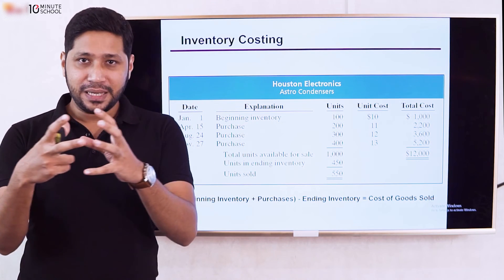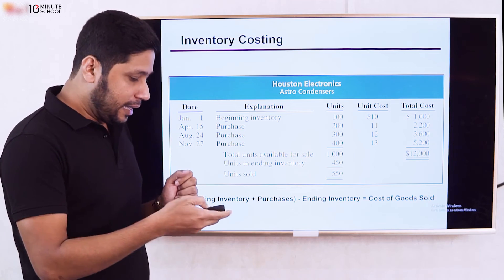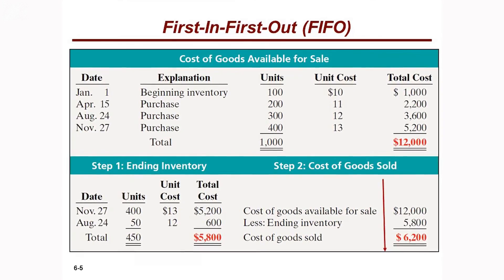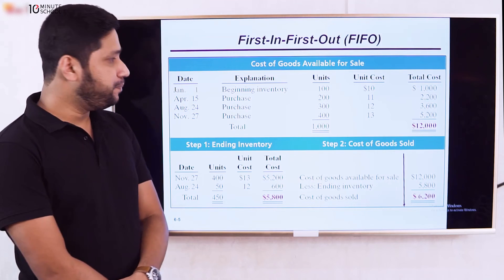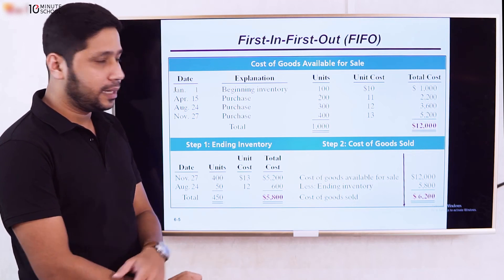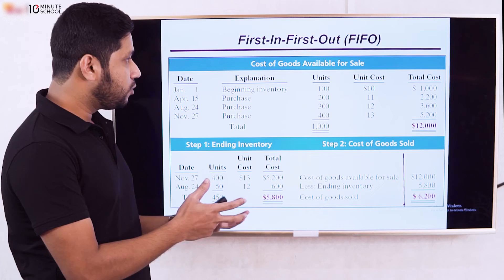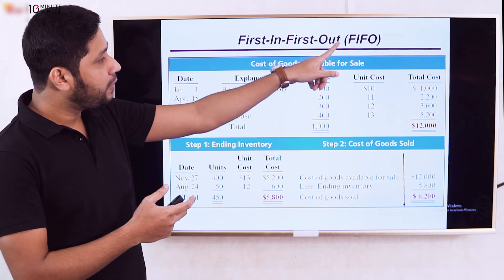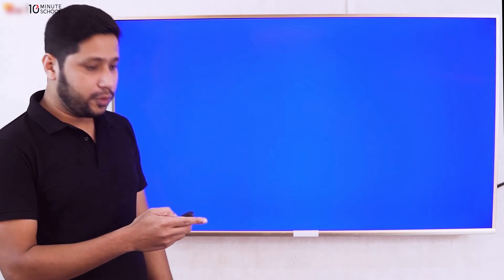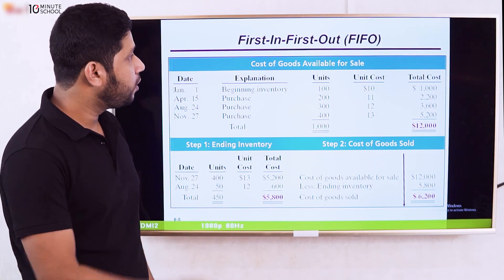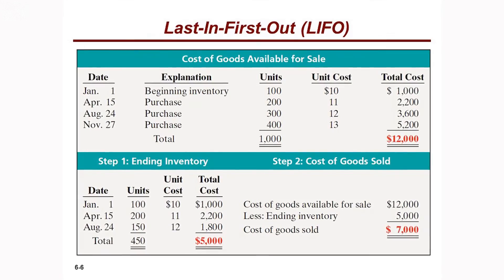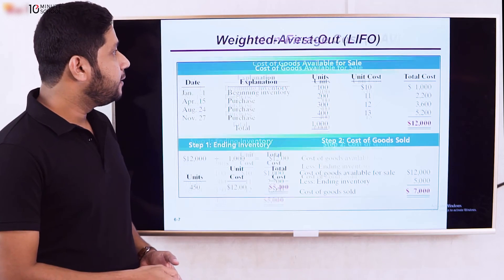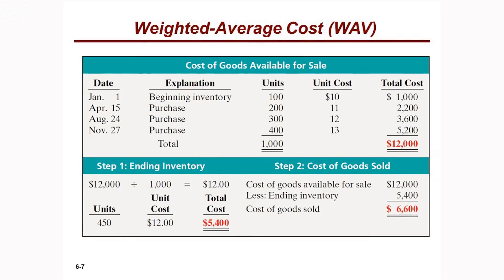This is how we calculate cost of goods sold and ending inventory using FIFO, LIFO, and weighted average methods. The calculations for each method have been shown in the previous slides.